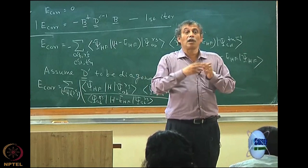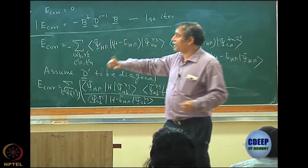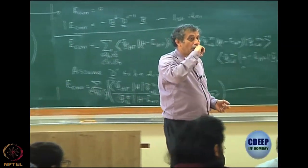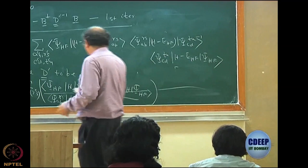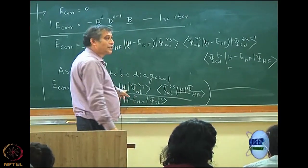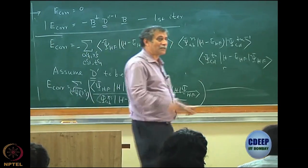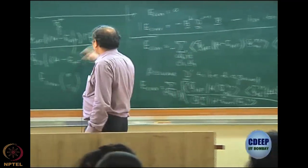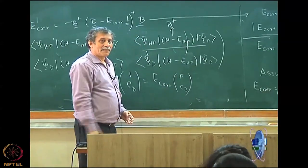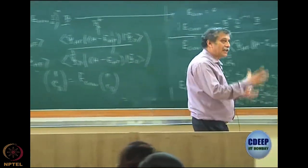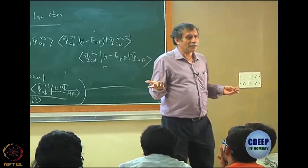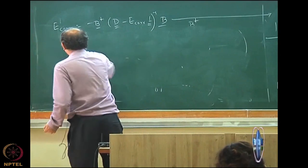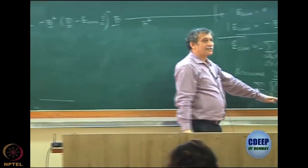From DCI to MP2 I have made many approximations, so the structure of DCI is lost. Once I stop at the first iteration, it is no longer DCI, and making the diagonal approximation further removes variational properties. The upper bound on the energy exists only when the DCI equation is solved exactly. This approximate form is more like a second-order perturbation result, where the denominator can be calculated using Slater rules — simply orbital energies.